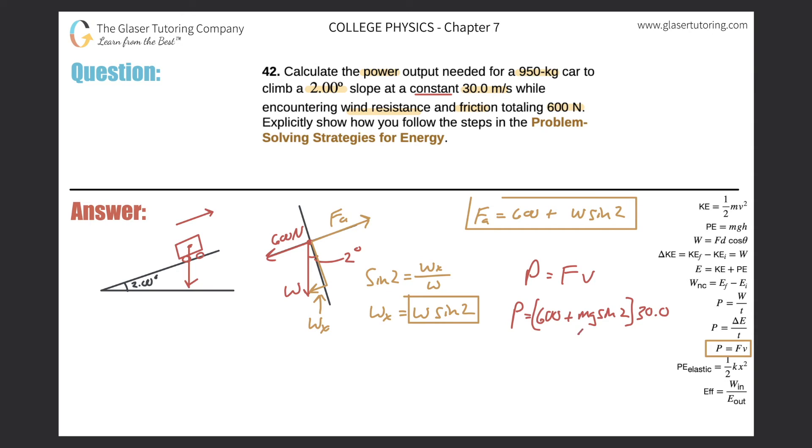So let's just throw in the weight, excuse me, the mass, and we can calculate it. All right, so this is going to be 600 plus 950 multiplied by 9.80 times the sine of two, all multiplied by 30. And throw it into the calculator. Let's see what we get.